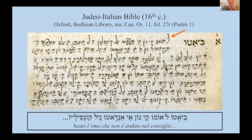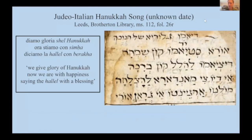Here is a portion of a Judeo-Italian song for Hanukkah. This one is just normal Italian written in Hebrew characters, except in this case there are Hebrew words mixed in. So it begins 'diamo gloria' — two Italian words — 'shel hanukkah,' then 'oras diamo kon simcha.' So we get the Hebrew alphabet but also some Hebrew words mixed into the Italian text.